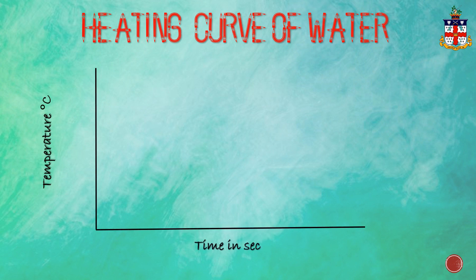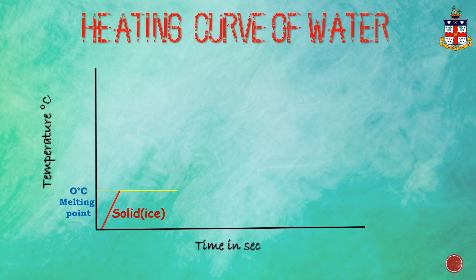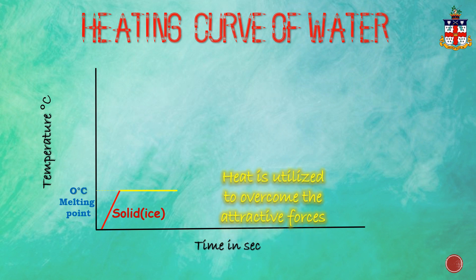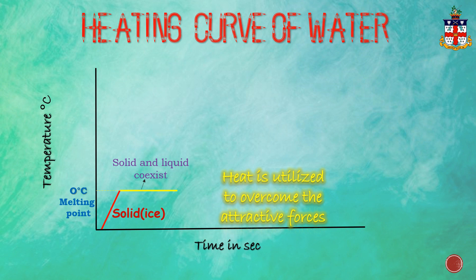To explain the heating curve of water, temperature is taken as the y-axis and time as the x-axis. When ice is heated, its temperature increases, and after some time the temperature becomes constant. This refers to zero degrees centigrade — the melting point of ice. During this period, the heat is utilized to overcome the attractive forces, and both the liquid and solid states co-exist at this temperature until all the ice has melted.